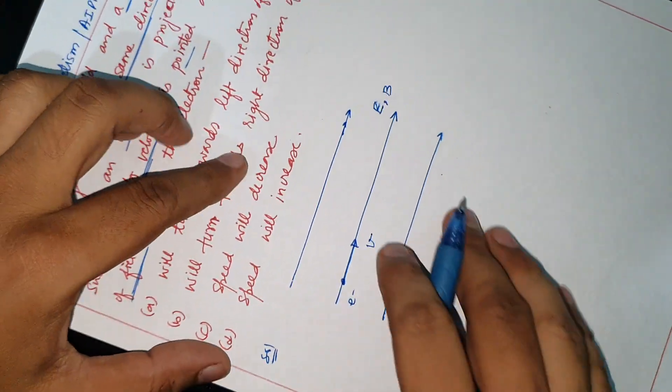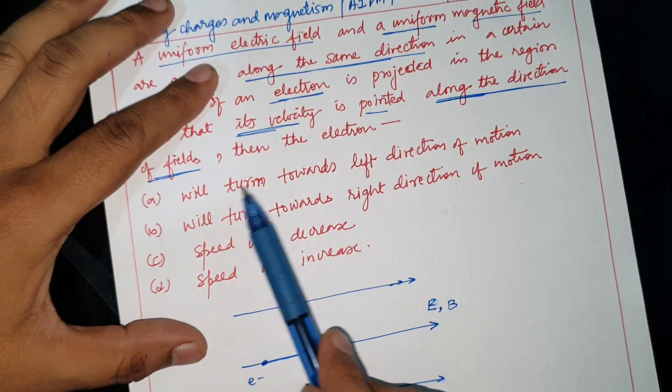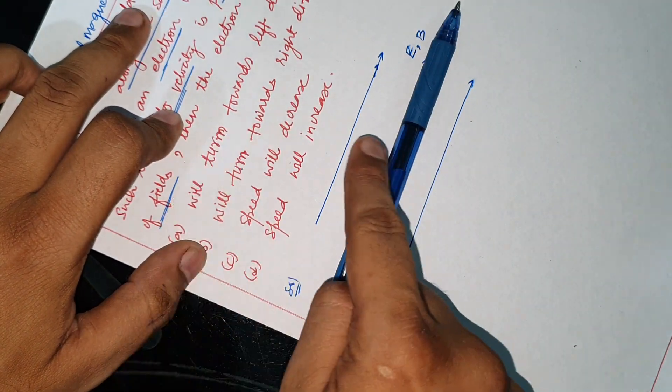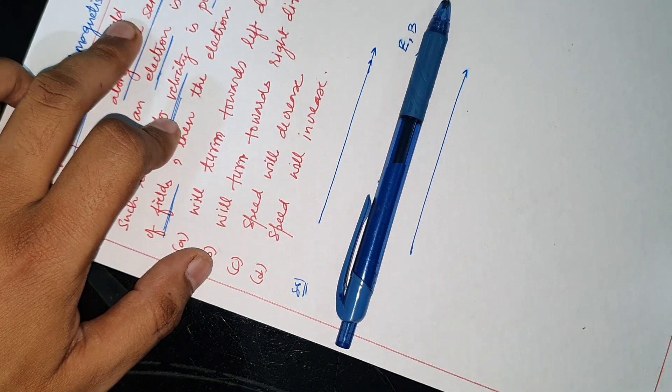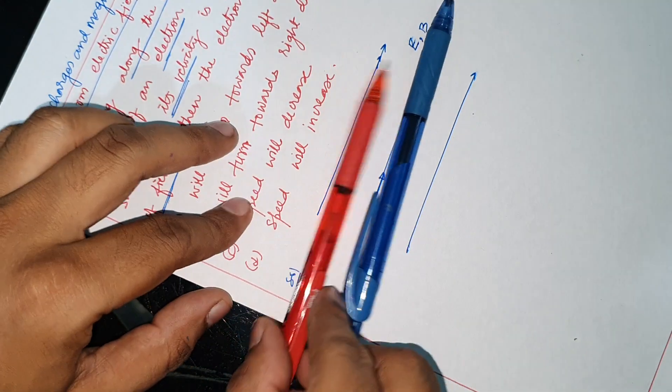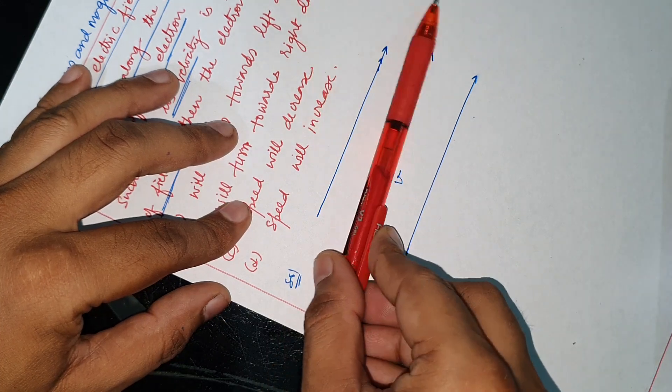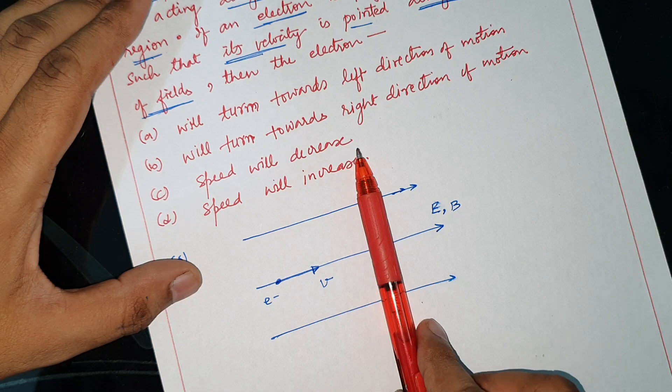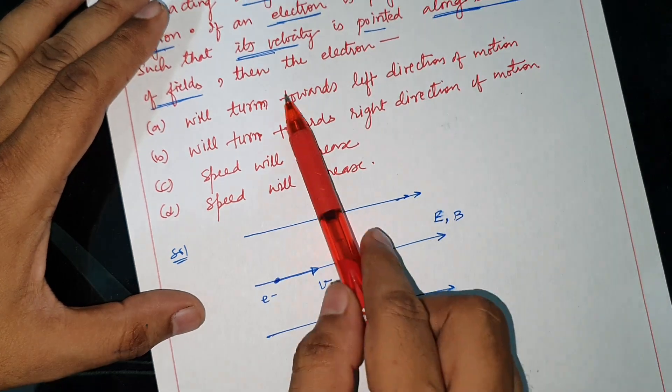The first part we are asked is: will it turn towards the left direction of motion or turn towards the right direction of motion? The second choice is: will speed decrease? These are the choices.